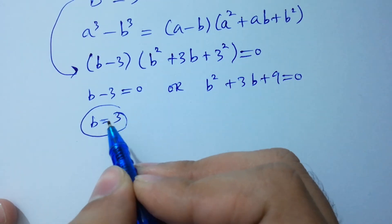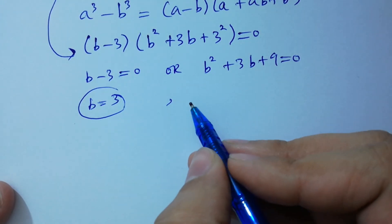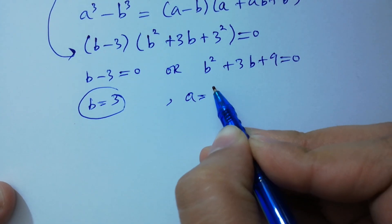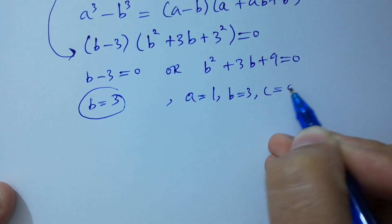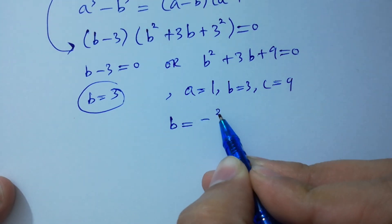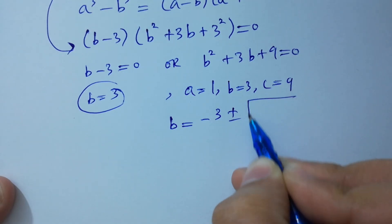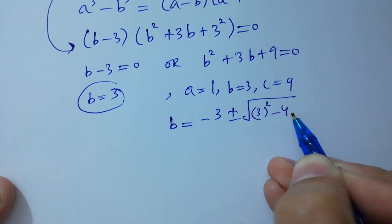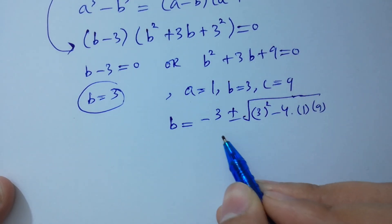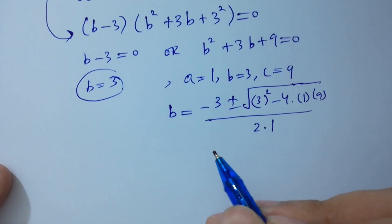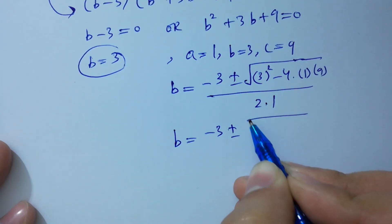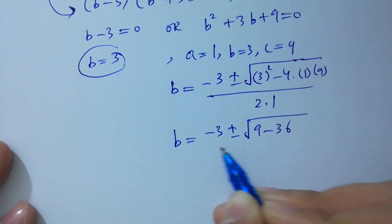B equals positive 3, which is our fourth solution. For the quadratic equation, we have a equals 1, b equals 3, c equals 9. Applying the quadratic formula: B equals minus 3 plus or minus square root of 3 squared minus 4 times 1 times 9 over 2 times 1.